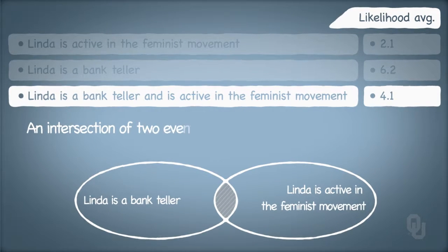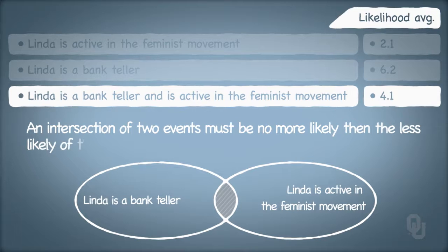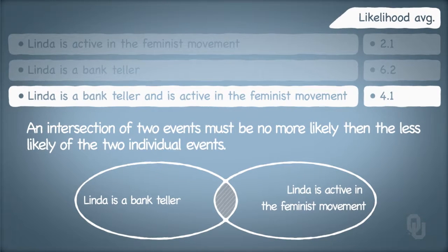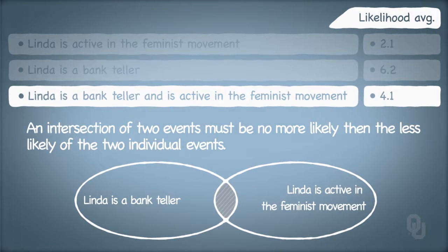The intersection of the two must, by definition, be no more likely than the less likely of the two individual events. Being two things is less likely, or at best as likely, than being one thing. The participants completely threw away the logic of probability when a bias about Linda entered their minds based on the narrative. The narrative told the participants that active in the feminist movement described Linda, regardless of its less likely combination with being a bank teller.